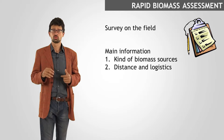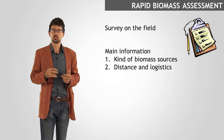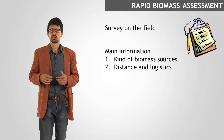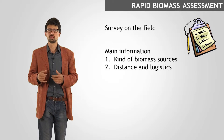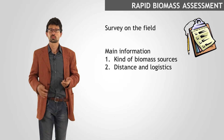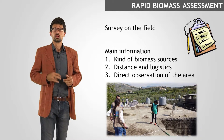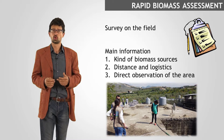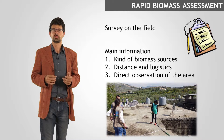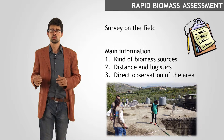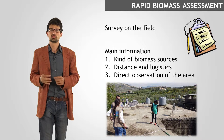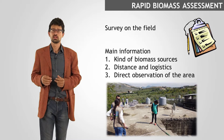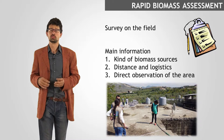Secondly, considerations should be done on the distance between the resources and the camps or settlements, and regarding all the logistic aspects affecting the transportation of fuel. Thirdly, the direct observation of the area of biomass collection is very important to notice eventual negative effects of fuel harvesting, while the observation of the area around the camps or settlements can reveal the availability of unexploited resources.